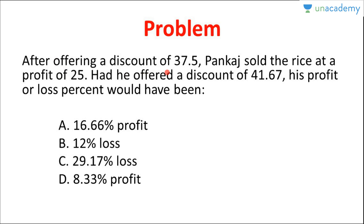The example is: after offering a discount of 37.5%, Pankaj sold rice at a profit of 25%. Had he offered a discount of 41.67%, his profit or loss would have been — Option A: 16.66% profit, Option B: 12% loss, Option C: 29.17% loss, Option D: 8.33% profit.